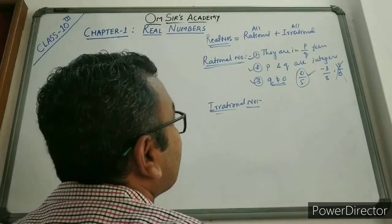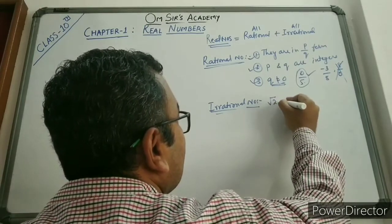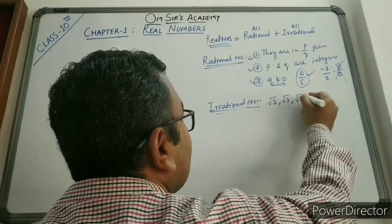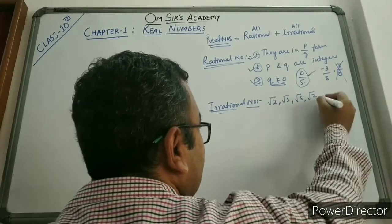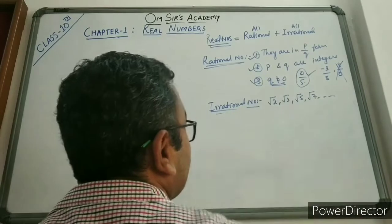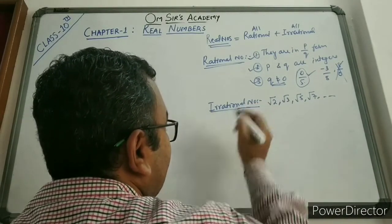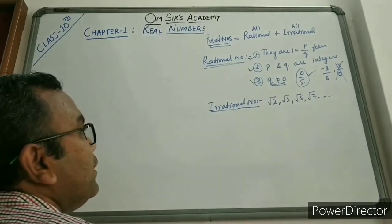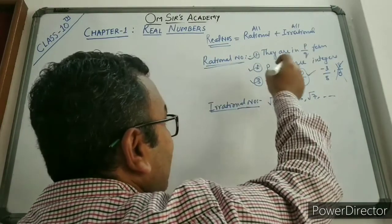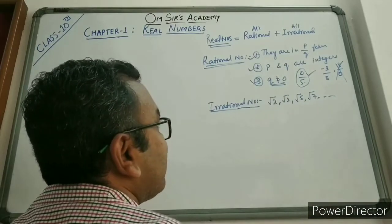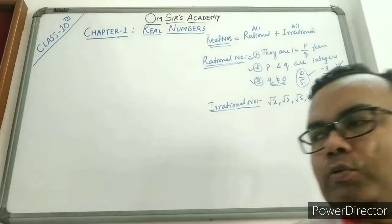Irrational numbers are those which do not satisfy the rational number conditions. For example, root 2, root 3, root 5, and root 7 are irrational numbers. Numbers whose perfect root we cannot take out, or which we cannot represent in P by Q form, are called irrational numbers.